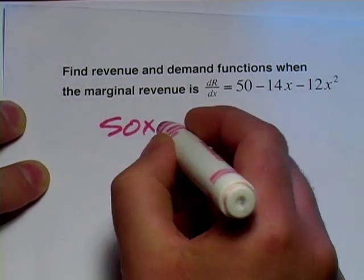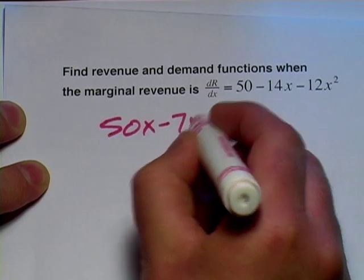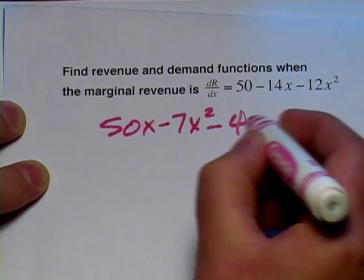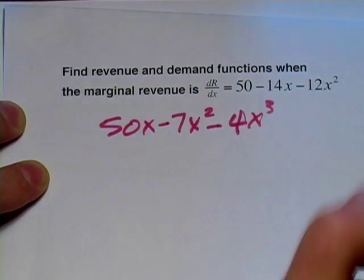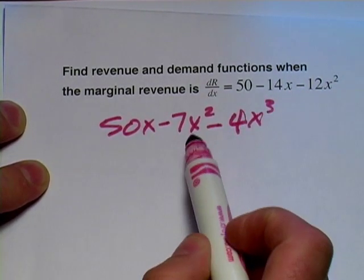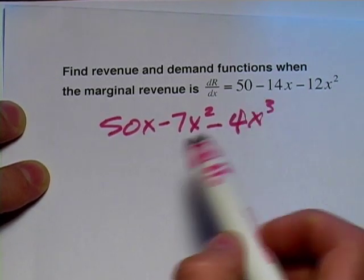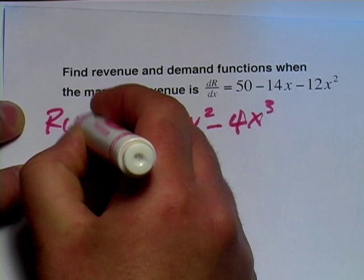we'll get 50x, minus 7x² minus 4x³. I think that all works out. You can check my work by taking the derivative of this and seeing if we get the marginal revenue function again. But that should be our revenue function.